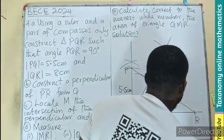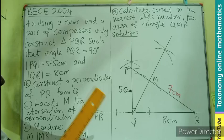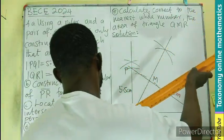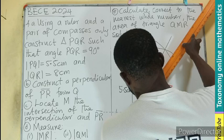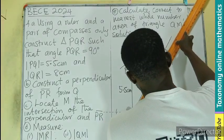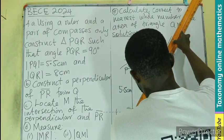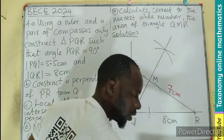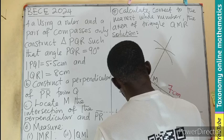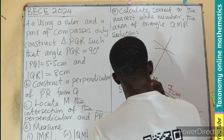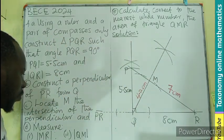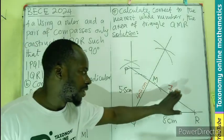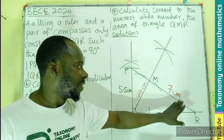We are also going to measure QM. That measurement gives us 4.2 centimeters. We write the answers on the diagram. Now with these measurements, we proceed to calculate the area of triangle QMR.